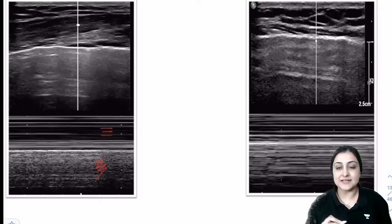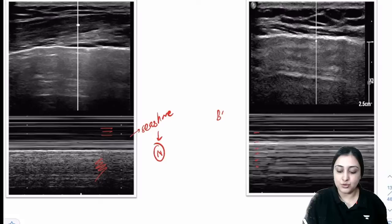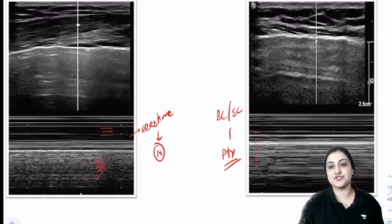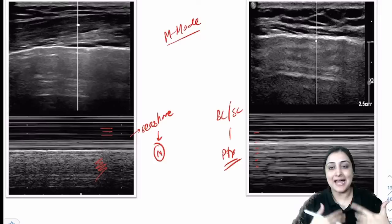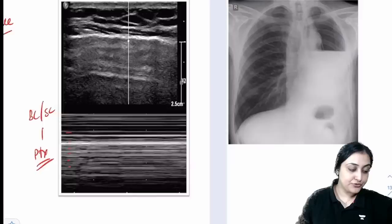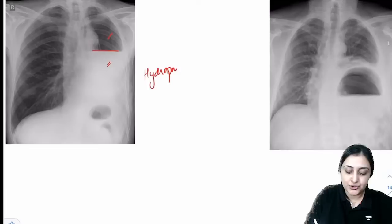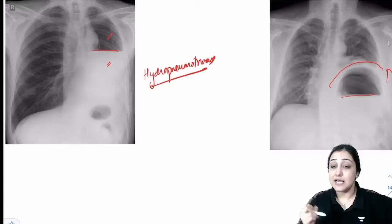Lung ultrasound: seashore sign (lines then granularity) = normal lung. Barcode/stratosphere sign (all lines) = pneumothorax on M-mode ultrasound. Normal pleura shows a sliding sign (visceral and parietal pleura moving together); absent in pneumothorax. Air-fluid level inside the chest = hydropneumothorax. If the level is below the diaphragm and the diaphragm is raised — this is a diaphragm injury (stomach in the thorax). Do NOT insert ICD in this case.